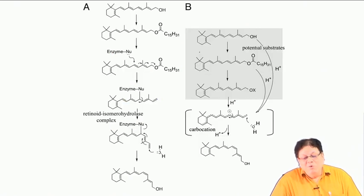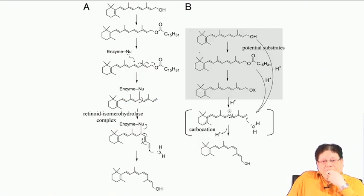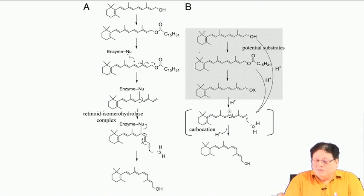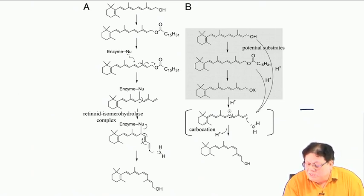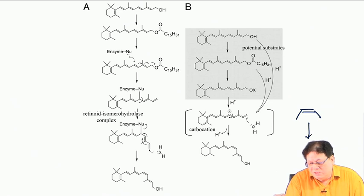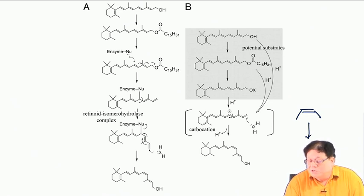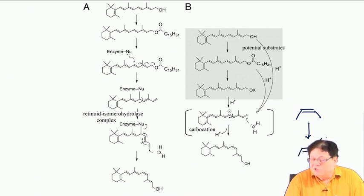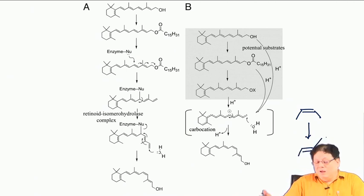If you want to know how light causes this change: the cis configuration is relatively unstable compared to the trans. So when light is incident on this double bond, cis can go to trans because trans is thermodynamically more stable.